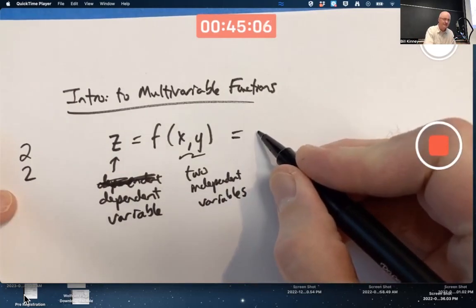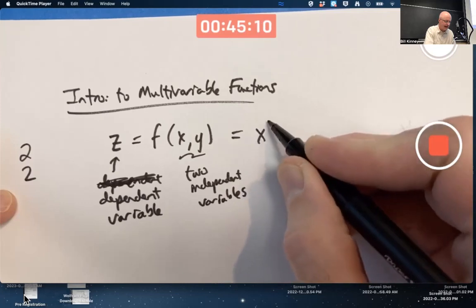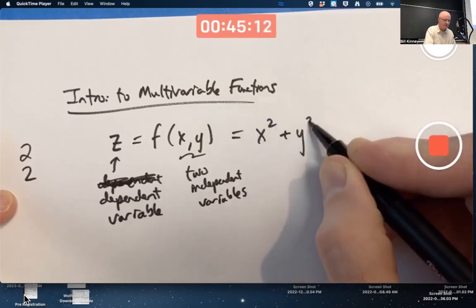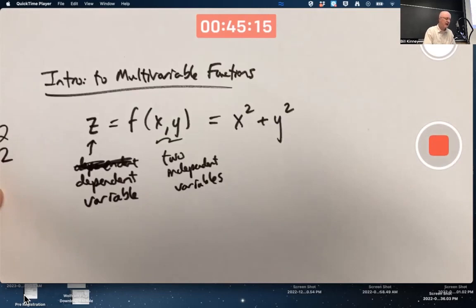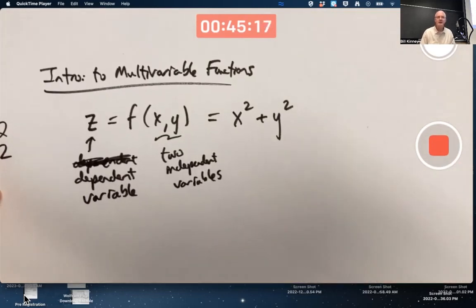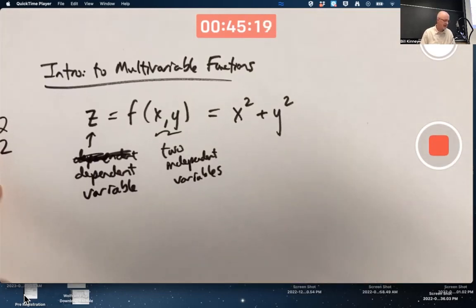Let's make it fairly simple. Let's say it's x squared plus y squared. There's my formula for this multivariable calculus function, function of two variables.